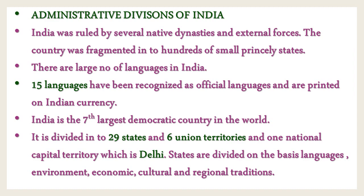Of these, 15 languages have been recognized as official languages and are printed on Indian currency. India is the seventh largest democratic country in the world. It is divided into 29 states and six union territories and one National Capital Territory, which is Delhi. States are divided on the basis of languages, environment, economic, cultural, and regional traditions. This is about the administrative divisions of India.